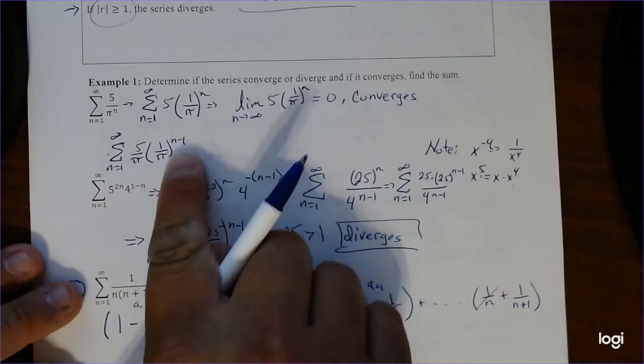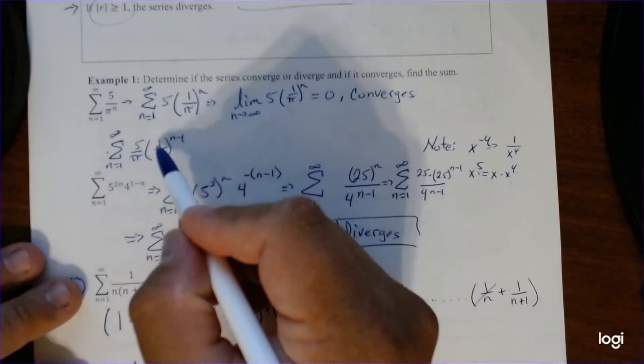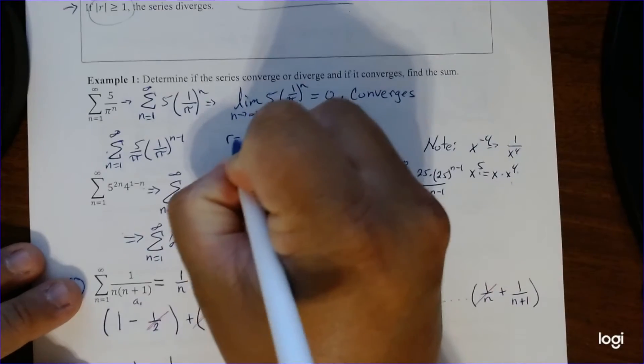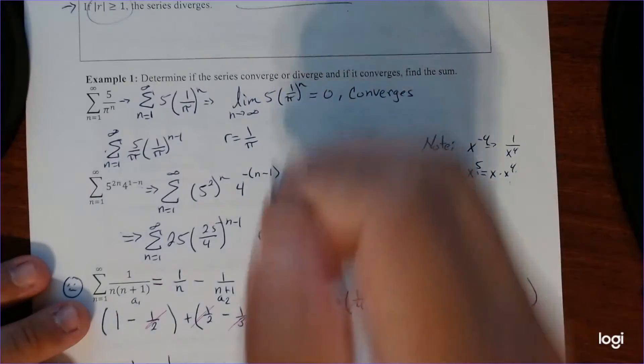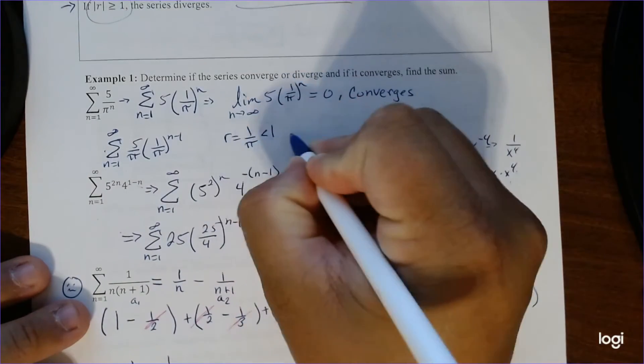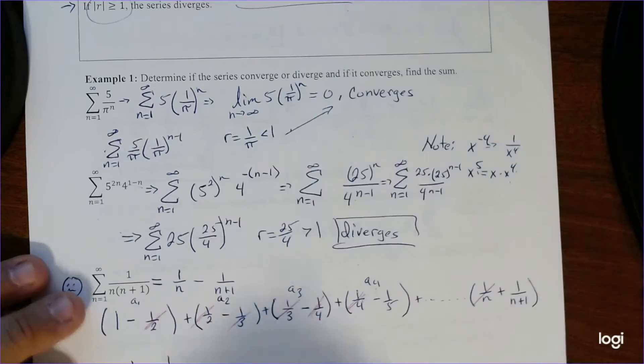I take 1 out, just drops it out. And now notice our value is 1 over pi. So that is definitely less than 0. So it converges. Good thing these are the same thing.